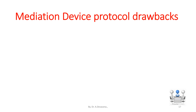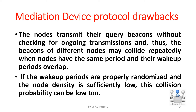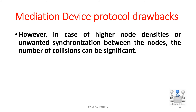Mediation device protocol drawbacks. The nodes transmit their query beacons without checking for ongoing transmissions, and thus the beacons of different nodes may collide repeatedly when nodes have the same period and their wake-up periods overlap. If the wake-up periods are properly randomized and the node density is sufficiently low, this collision probability can be low. However, in case of higher node densities or unwanted synchronization between the nodes, the number of collisions can be significant.